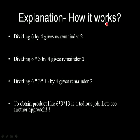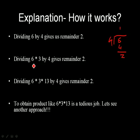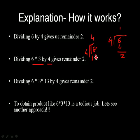Explanation: how remainder theorem works. Let us divide 6 by 4. So, 4 ones are 4, this gives 2 as a remainder. Again divide: 6 into 3 by 4, that is 18 by 4. So, 4 fours are 16, this will give 2 as a remainder.